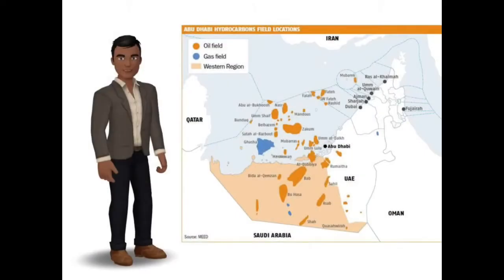As I brought up earlier, oil is what makes this region so wealthy. This map shows you where the oil fields and gas fields are located — mainly in the western region — but you can see there are a lot of areas in this region that contain the natural resource of oil.